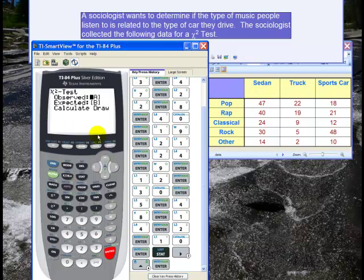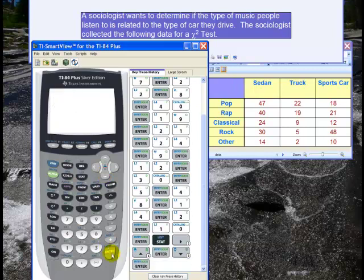The observed is A. That was the matrix I put it into. The expected is B. So if we want to find the expected counts, later on we can go to B and hit enter. And we just go to calculate. And I hit enter.